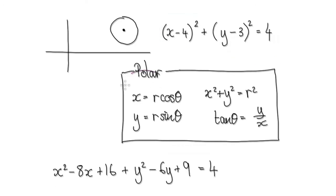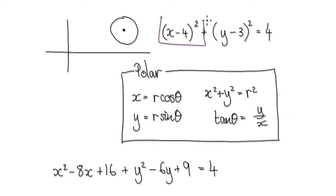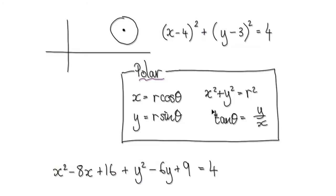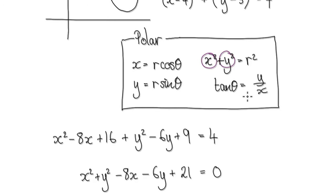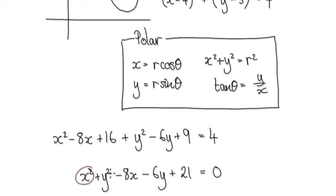To convert into polar form, we've seen this before. Let's multiply this out first. Multiplying out (x - 4)² gives x² - 8x + 16, and multiplying out (y - 3)² gives y² - 6y + 9. When you simplify the constants — 16 + 9 - 4 — that becomes 21, so we get x² + y² - 8x - 6y - 21 = 0.